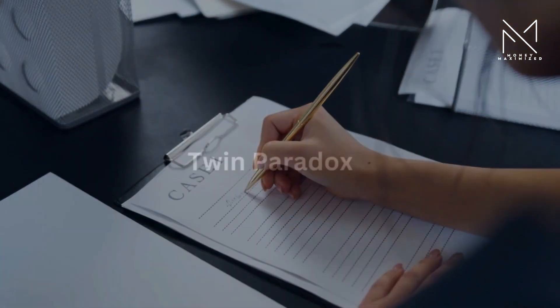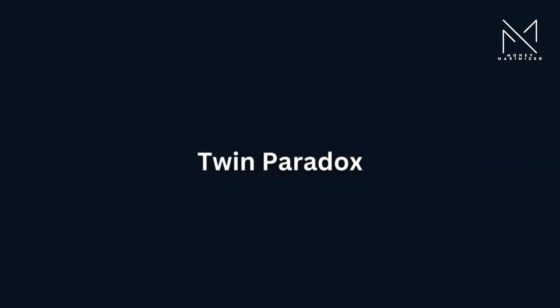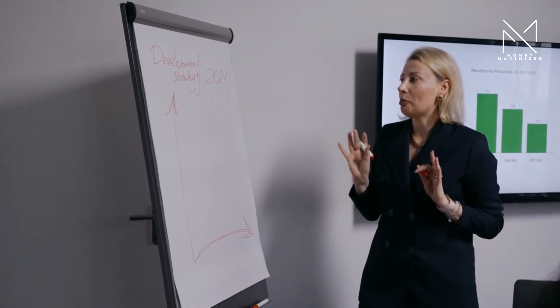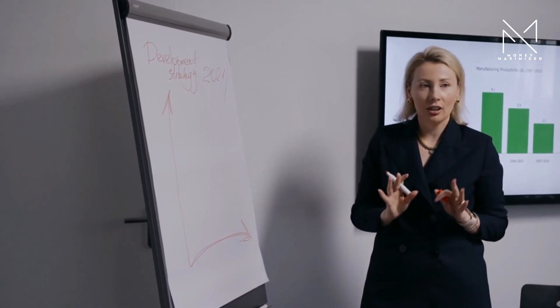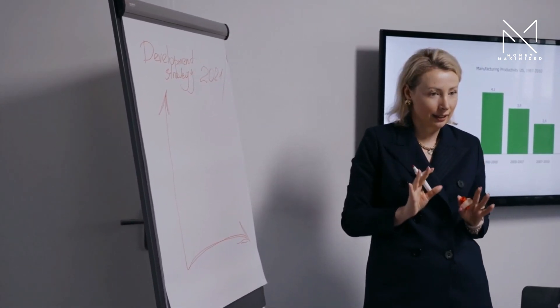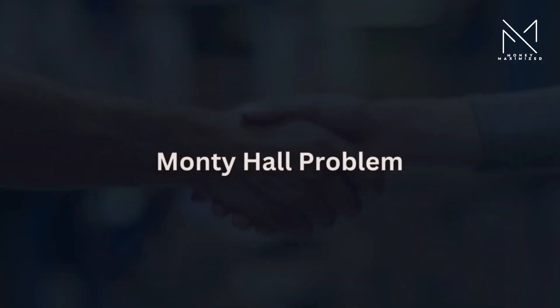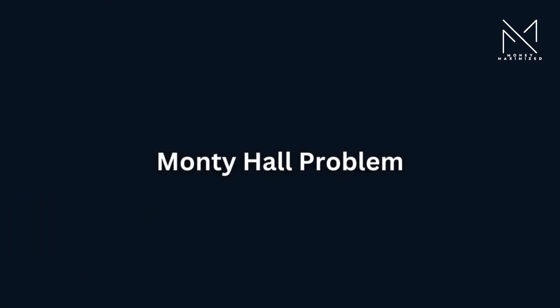Twin Paradox: in the theory of relativity, particularly in the context of special relativity, the twin paradox describes the situation where one twin who travels into space at near light speed returns to earth younger than the twin who stays on earth. This paradox challenges our intuitive understanding of time.